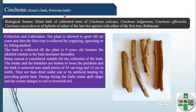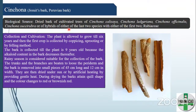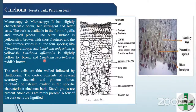Cinchona is also known as Jesuit's bark or Peruvian bark. There are different biological sources: bark from trees of Cinchona officinalis, Cinchona calisaya, C. succirubra, and C. ledgeriana — or hybrids of the first two or last two — belonging to family Rubiaceae. All these are not adulterants but are the official biological sources for cinchona.